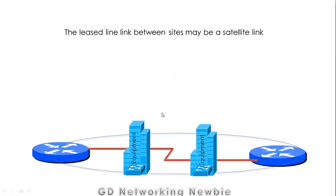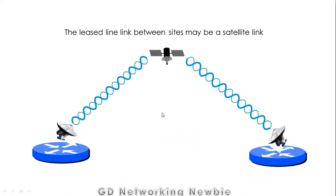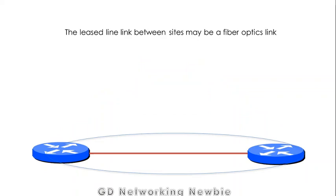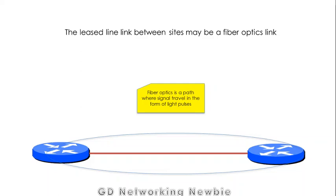The leased line between sites may also be a satellite link, where the signal travels in the form of radio waves between two points. Additionally, the leased line link between sites may be a fiber optics link, where information is carried in the form of light pulses, meaning light travels carrying our information from one organization to the other.